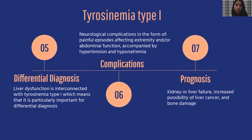Complications for tyrosinemia type 1 include neurological complications which manifest through painful episodes affecting the extremities and/or abdominal function, accompanied by hypertension and hypothermia. Hyponatremia may present at any time and may result in respiratory failure and death. Regarding prognosis, babies with tyrosinemia type 1 experience weight loss due to food intolerance. The disease can also lead to kidney or liver failure, increased possibility of liver cancer, and negatively affects bone health.